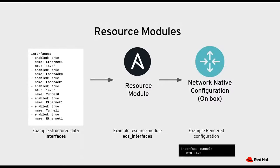Here's a quick example of how the resource modules work in reverse from the facts subsystem. The payload — the structured data on the left-hand side — is an example of what the facts subsystem returns to the playbook author. That information can be passed without reformatting or structure change to the resource module. The resource module will convert it back to configuration text and apply the configuration to the box. The resource module, when invoked, actually collects information using the facts module in the background, does a Python dictionary difference between the inbound payload from the user and the facts just gathered, builds a delta configuration, and that's what gets pushed to the box.